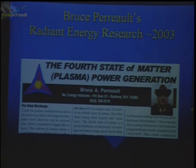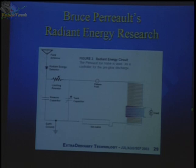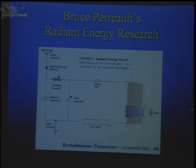Then I looked into what Bruce Perrault was doing. Also back in 2003, he was exploring plasma technology. This is Bruce's circuit — what he called a radiant energy receiver circuit, which used a field antenna, diode, a couple of capacitors, and a transformer that stepped down the voltage. He also had this ion valve, which caught my curiosity. I thought maybe this is something similar to what Jean-Louis Nauden was doing.